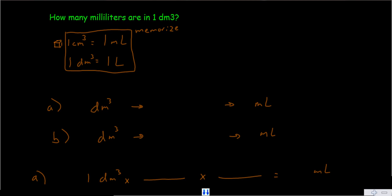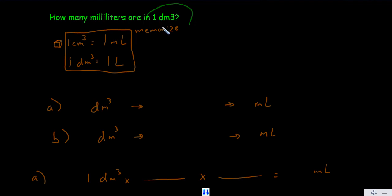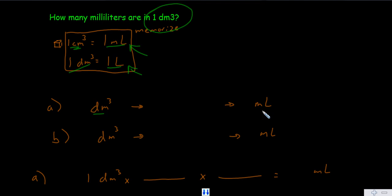Our first question is: how many milliliters are in one decimeter cubed? To understand this relationship, you need to consider two facts that you do need to memorize. One is that one centimeter cubed is the same as one milliliter. And the other is that one decimeter cubed is the same as one liter. You can use either of these facts to convert from decimeters cubed into milliliters. What unit can you relate to both of those units?